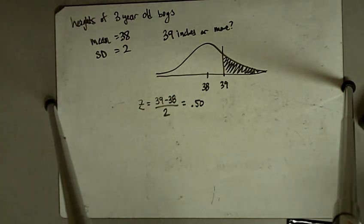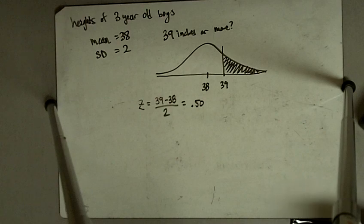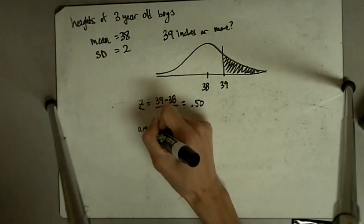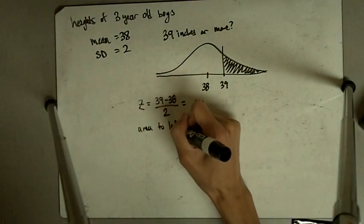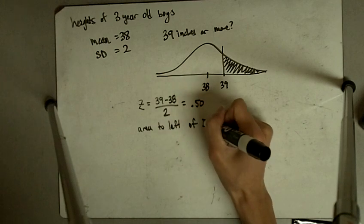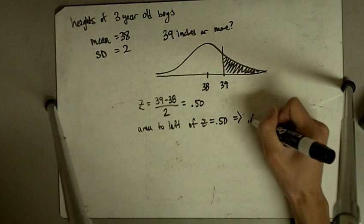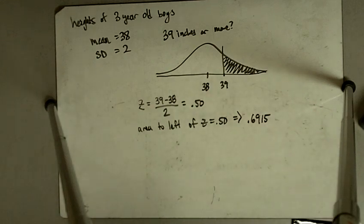And so when we look up 0.50, we get 0.6915, so the area to the left of z equals 0.50 is equal to 0.6915, that's the area to the left.